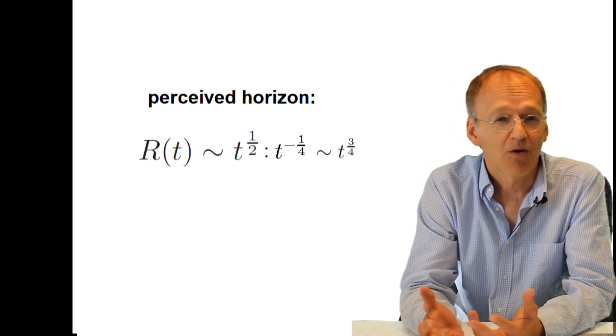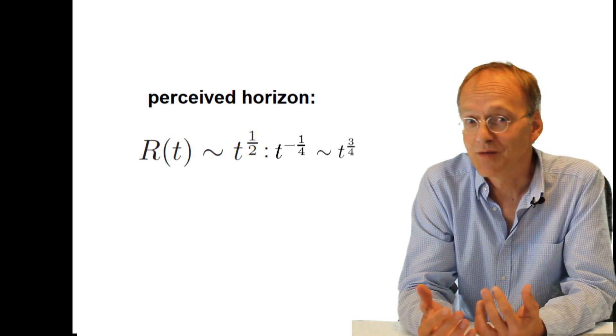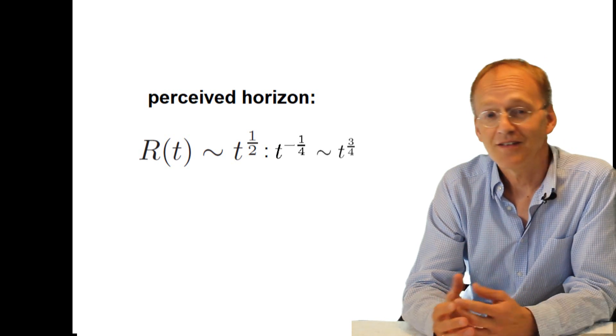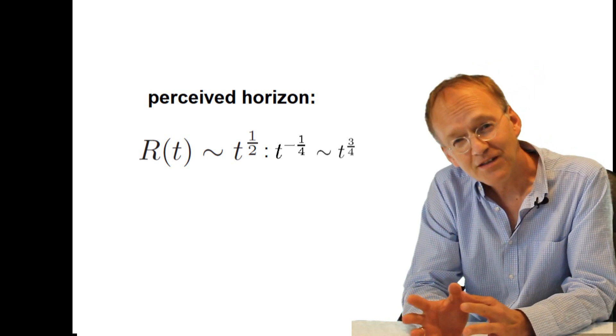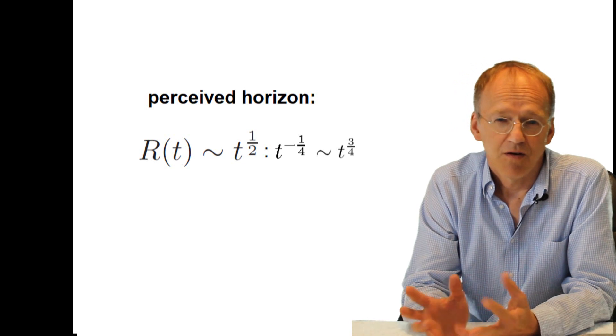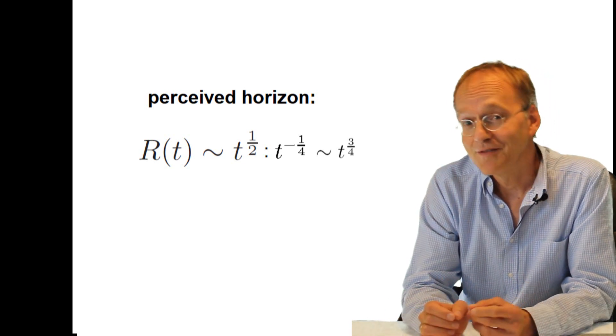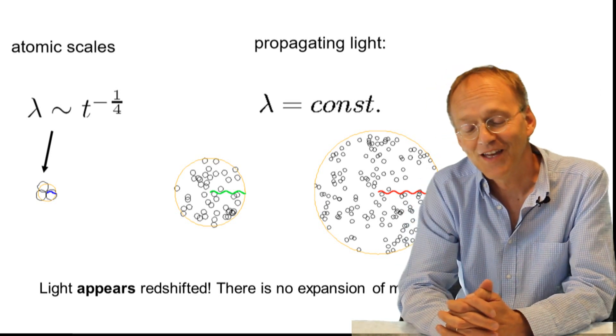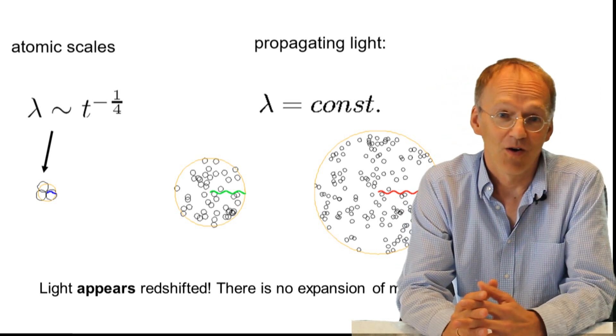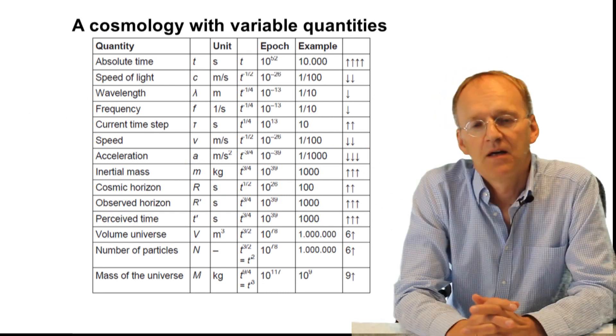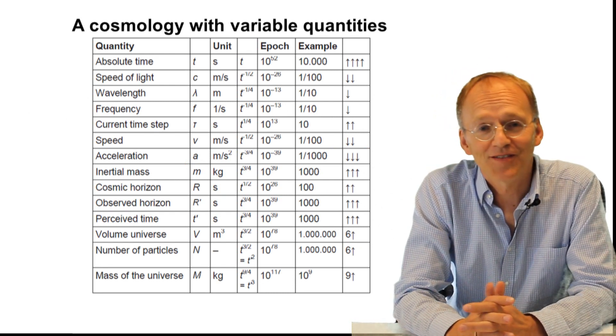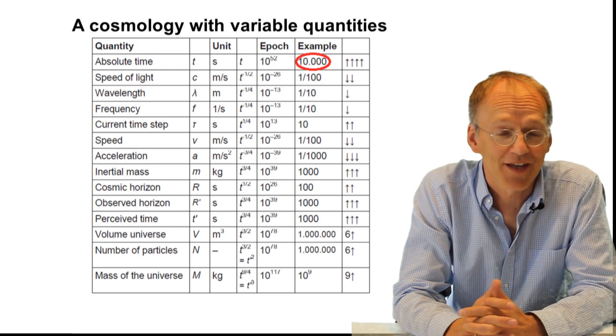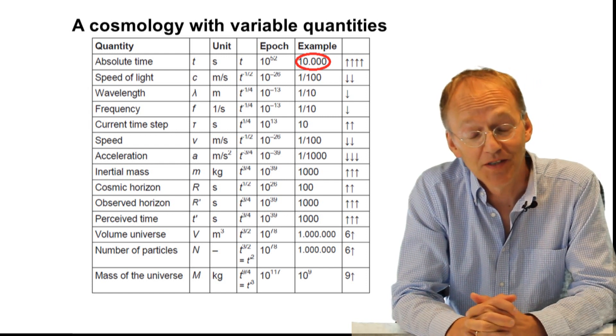And a little mental arithmetic already gives you a glimpse of what I'm trying to tell you, because if t to three quarters is 10 to the power of 40, then t itself has to have a power of about 53. But for the sake of clarity, let's introduce some redundancy and take an encompassing look on all the variable quantities. Now to make it still easier, let's consider absolute time 10 to the power of 4, 10,000 time steps in arbitrary units.